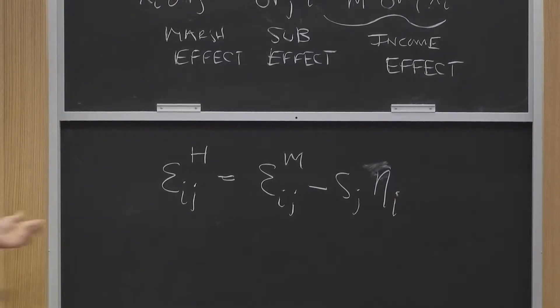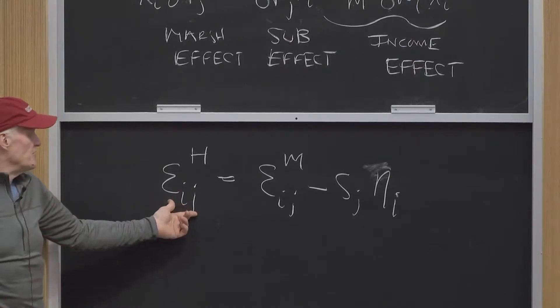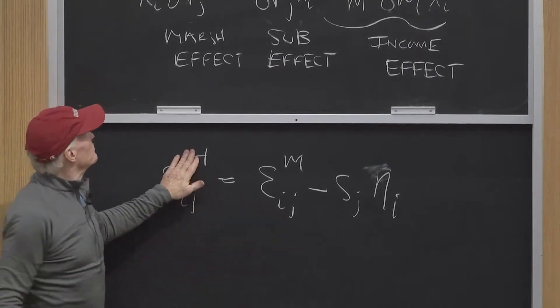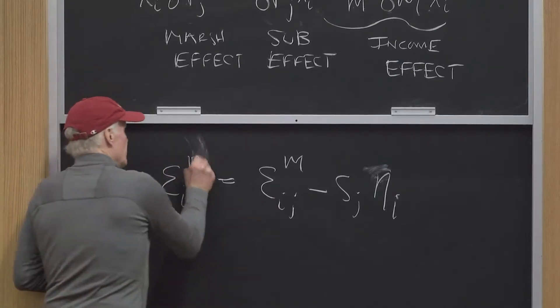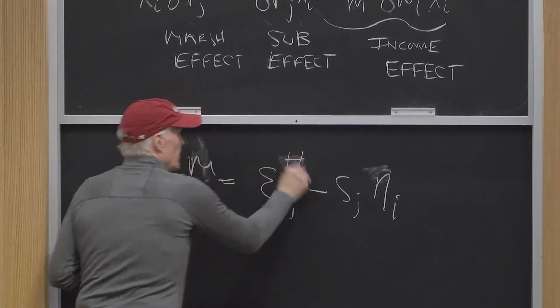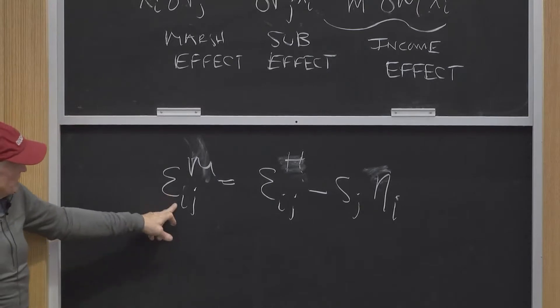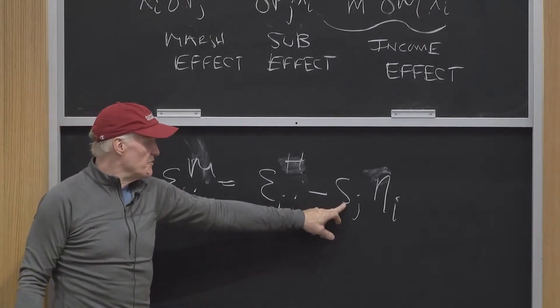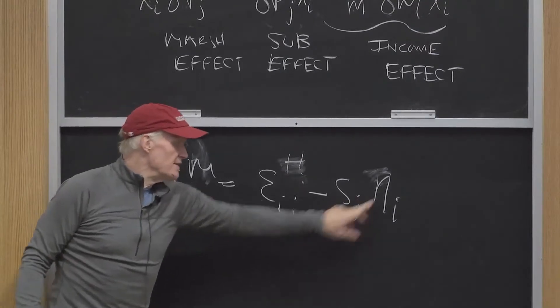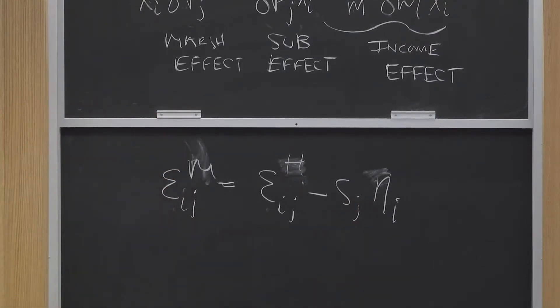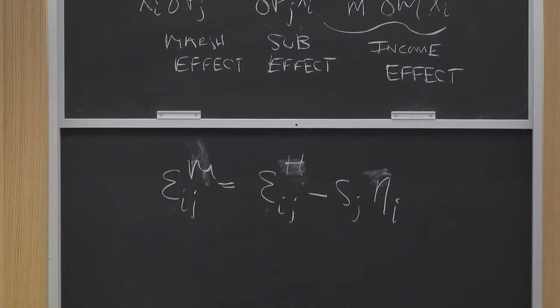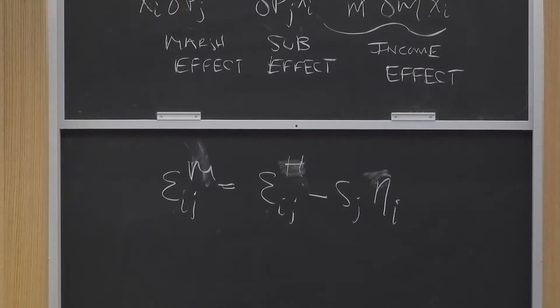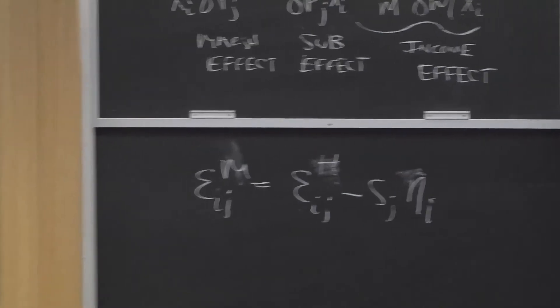It says the percentage response of good i to the price of good j is—I'm sorry, I forgot I flipped my formula. The Marshallian response is the Hicksian response minus the share of the good whose price has changed times the income elasticity of the good we're looking at. So the size of the income effect depends on how big good j is and how responsive to income good i is.